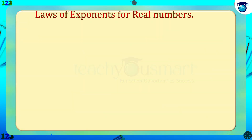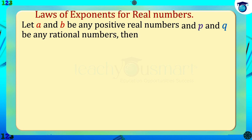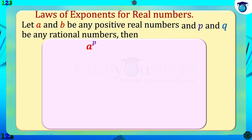Now we will learn the laws of exponents for real numbers. Let a and b be any positive real numbers and p and q be any rational numbers. Then: first, a raised to p multiplied by a raised to q equals a raised to p plus q. Second, a raised to p divided by a raised to q equals a raised to p minus q.